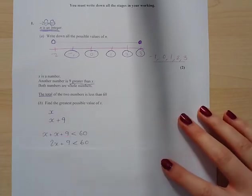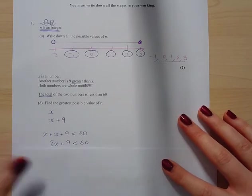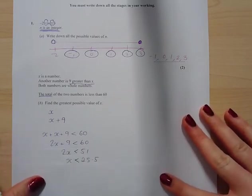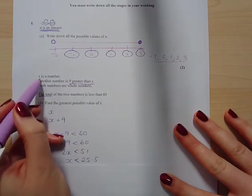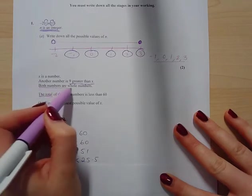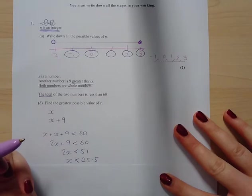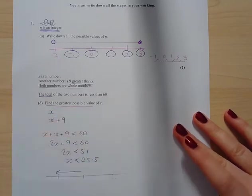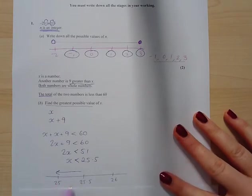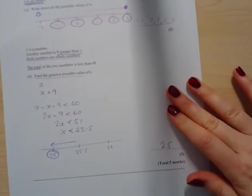So then I say, okay, well, 2x plus 9 has got to be less than 60. And then I solve it just like an equation. I subtract 9 from both sides and divide both sides by 2 to get 25.5. So x is less than 25.5. And the question says x is a number and both numbers are whole numbers. So x must be a whole number and we want to find the greatest possible value of x. So if it's less than 25.5, then I know the biggest number it could possibly be is 25 because the biggest whole number that we've got. So the answer for that one is 25.